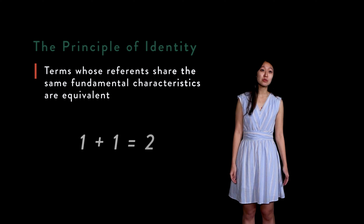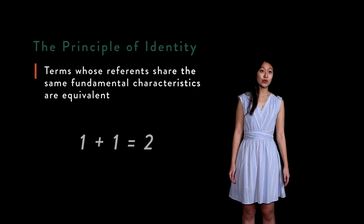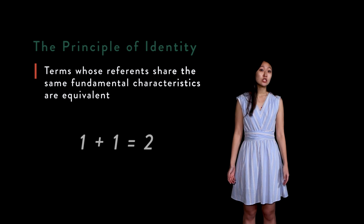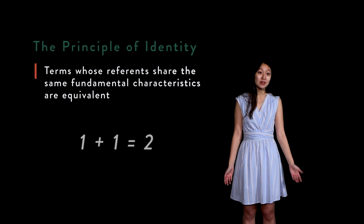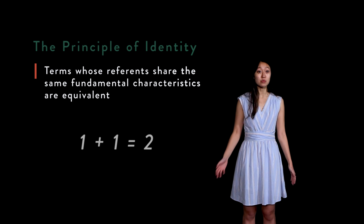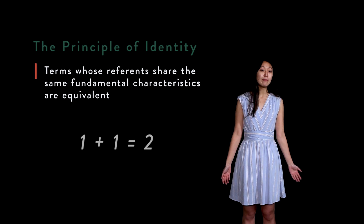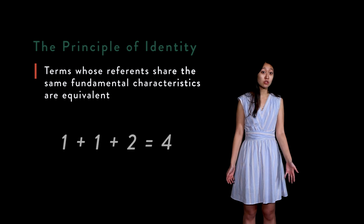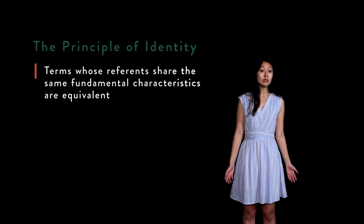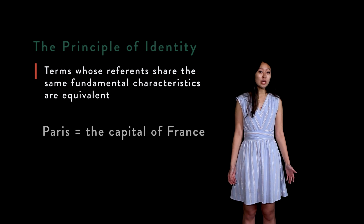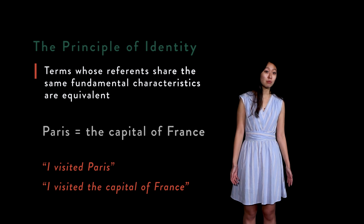Three: one plus one equals two. This example illustrates more precisely what is meant by equivalence. As you will have learned in your math classes, one added with itself equals two. In any equation we could substitute two with one plus one, or vice versa — for example, two plus two equals four, or one plus one plus two equals four. Similarly, in any sentence in which 'Paris' occurs, we can replace it with 'the capital of France' by the principle of identity.